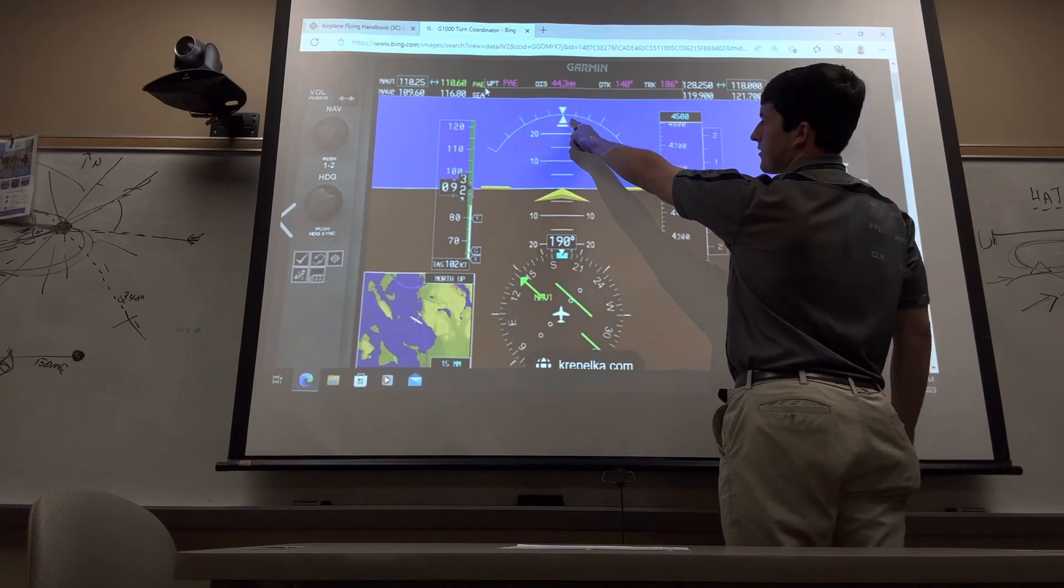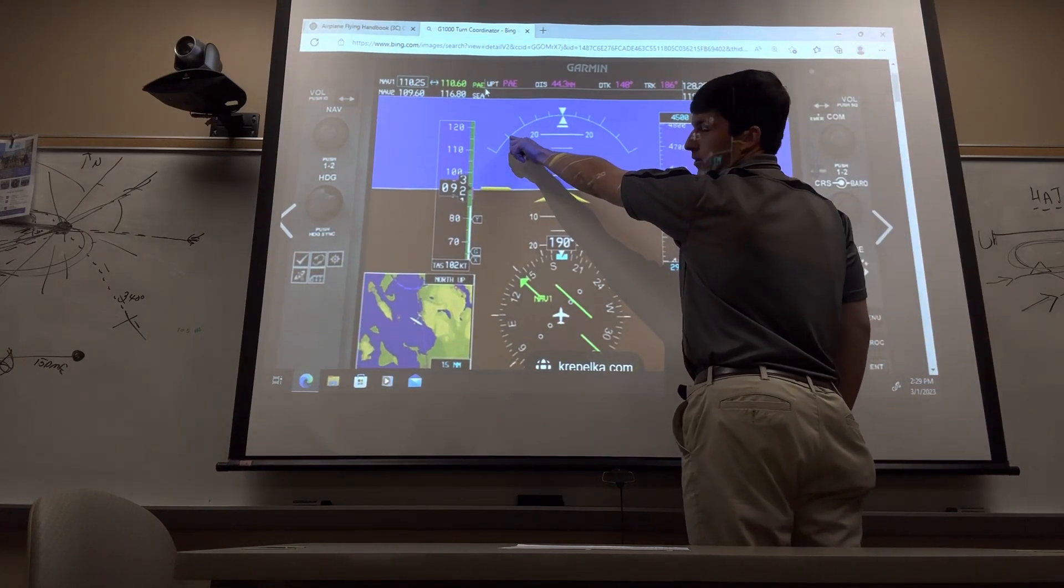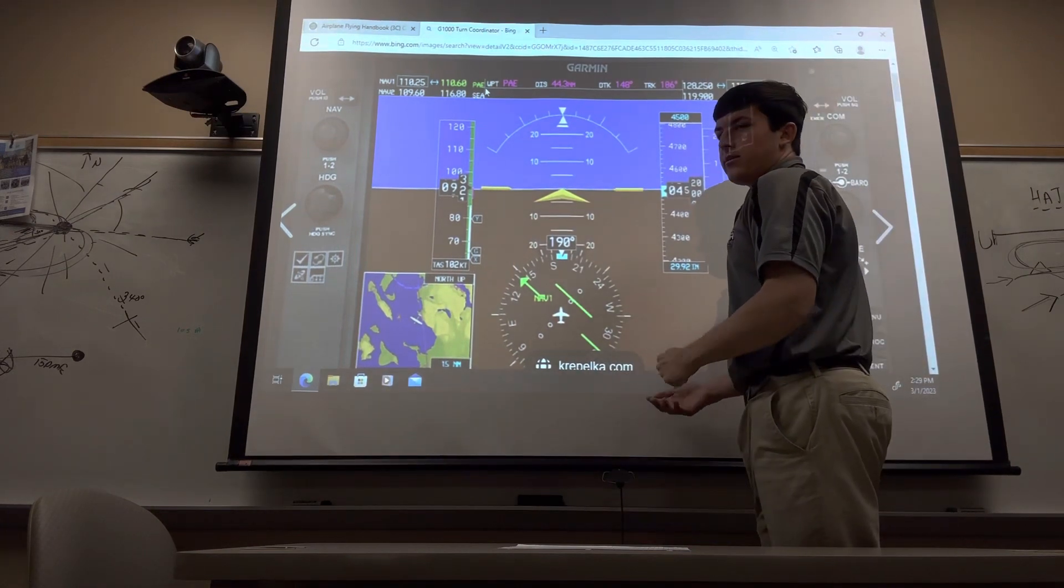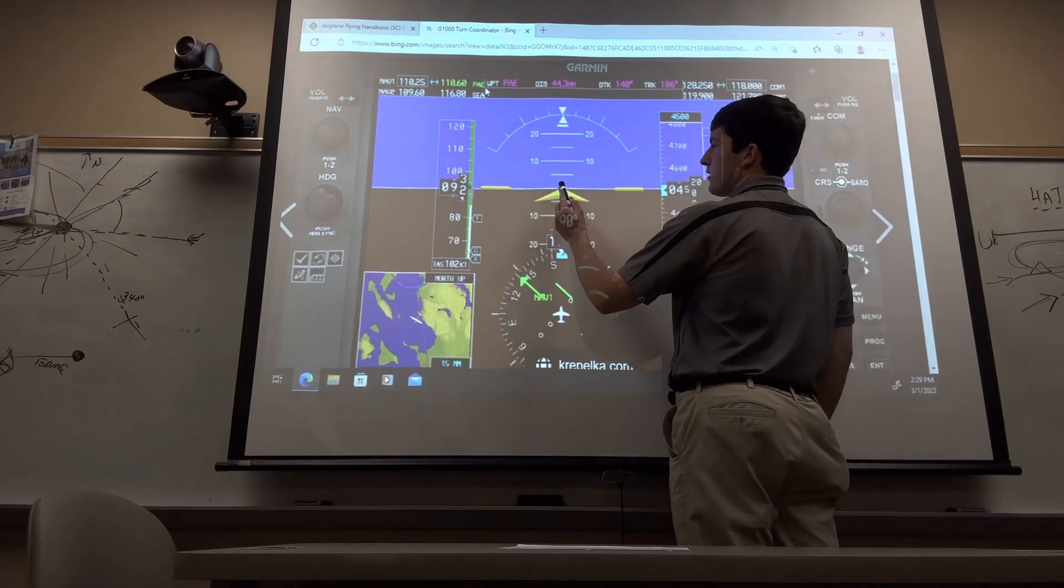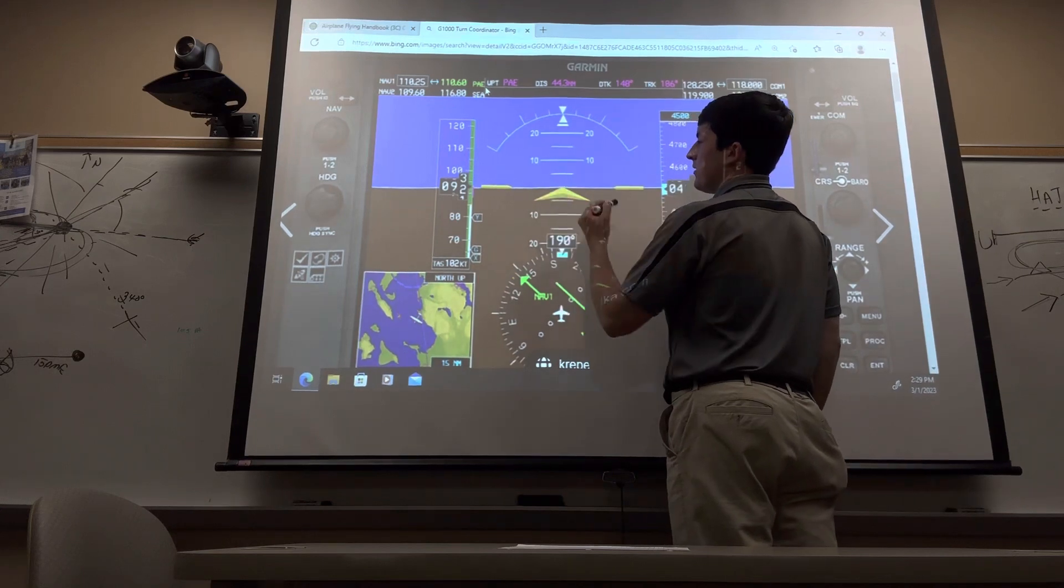We would begin that bank, in our case starting to the left. We would start here and end at this marker right here at 45 degrees. As we said earlier, we're going to have to pitch up to maintain that altitude. We're going to add in more back pressure, keeping ourselves in between this range right here, about 2.5 degrees to about 5 degrees up here.